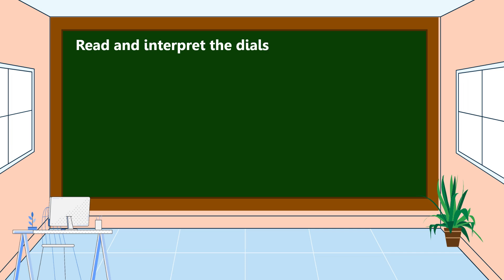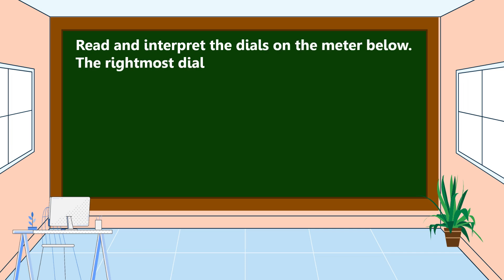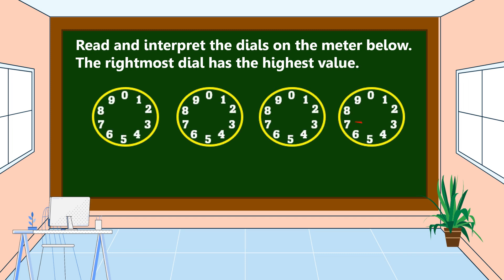Read and interpret the dials on the meter below. The rightmost dial has the highest value. Reading from right to left: on the rightmost dial, the arrow is pointing to seven, so we record this as seven. Next, the arrow is pointing to six. Looking at the dial to the right, it has already passed zero, so the answer in this dial is six.